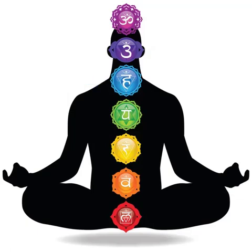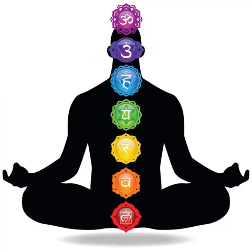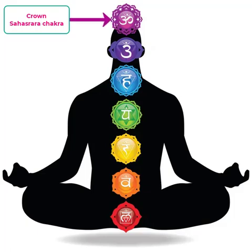Over the forehead is where we talk about the third eye — the Ajna chakra, as it is also called. At the top of the head is the Sahasrara chakra, the crown chakra.